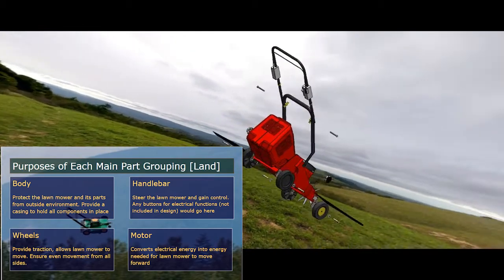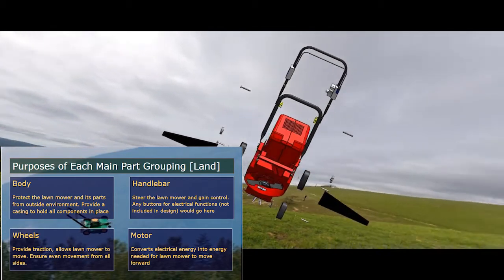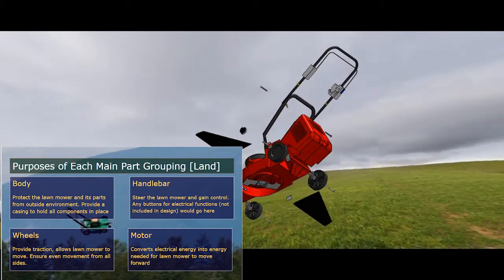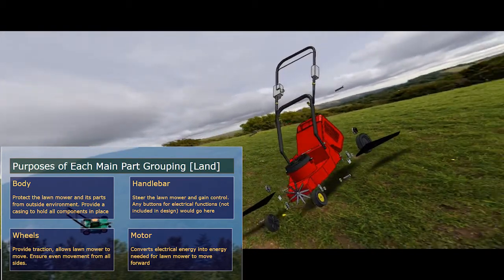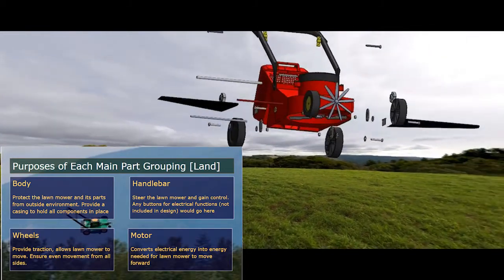In the first exploded view, you can see all of the hex nuts, the bolts, and the rods that are holding all of the parts together. This especially includes holding together the wheels to the body, the wings, and the adjusters.